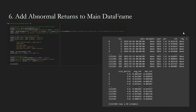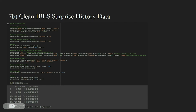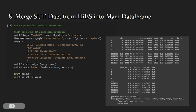We can then add the abnormal return for each row of data. We do so by calculating the average return of firms from the same size decile on each day and subtracting it from a firm's raw return on that day. Next, we import the IBES surprise history data, which includes each firm's SUE score for that quarter. We clean the data, filtering for data after 2019 and quarterly earnings per share data. We also add the corresponding CompuStat data date for each SUE by setting it to the last day of that month.